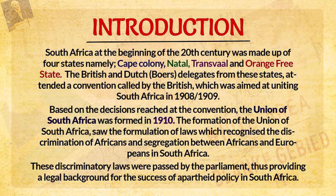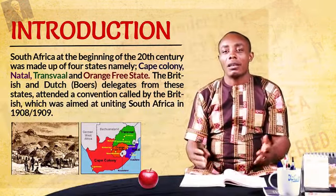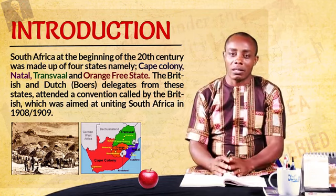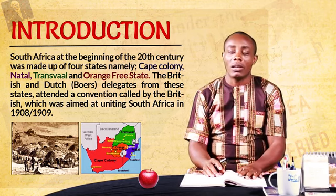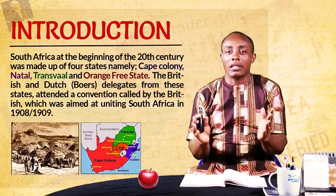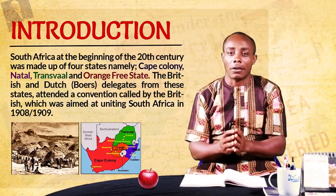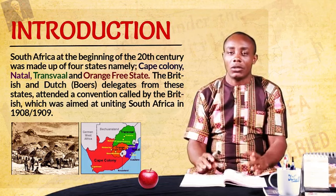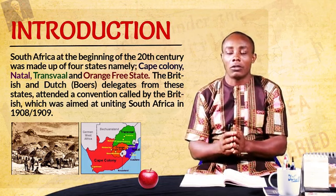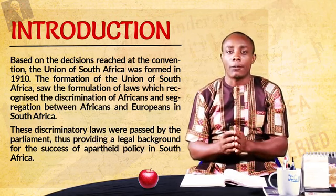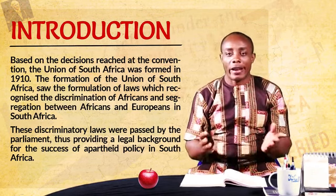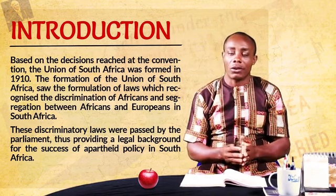At the beginning of the 20th century, from around 1908 to 1909, the British colonial masters called for a convention by these four states. Delegates of the British and the Dutch — that is the Boers — attended this convention. The aim was to unite these states together to have a Union of South Africa. By 1910, the Union of South Africa was formed. After the formation of this union, some laws were made which were against African populations in South Africa.